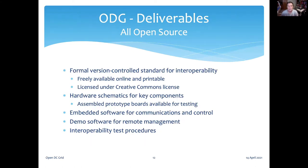ODG aspires to create a standard — a formal version-controlled document that defines the standards, like similar documents from the IEEE or IEC. Our standard will be accessible online and free under a Creative Commons license. In keeping with our goal to create a practical standard validated with working implementations, we will supply open-source hardware schematics for working hardware that can be used for testing or even the basis for manufactured products. We expect OEMs to take our designs, cost-reduce them, add unique features, and offer them to system integrators. Our repositories also include open-source firmware and prototype software for remote management. Another key deliverable is a test suite that OEMs can use to validate that their products conform.